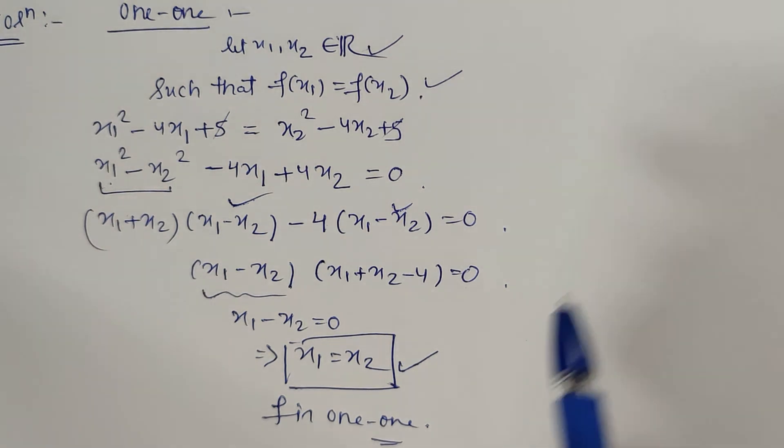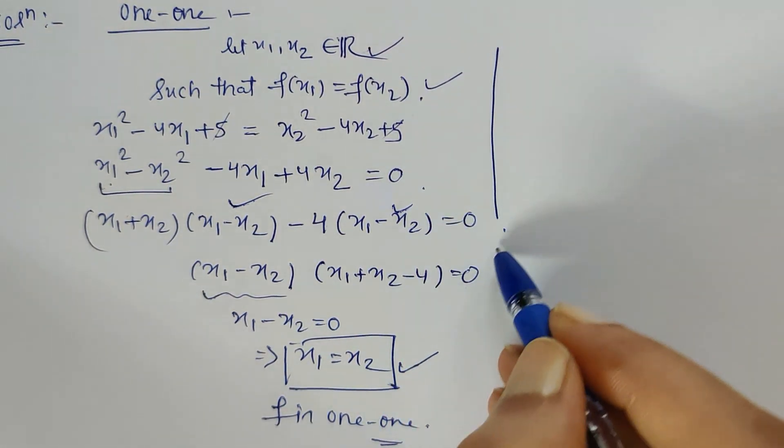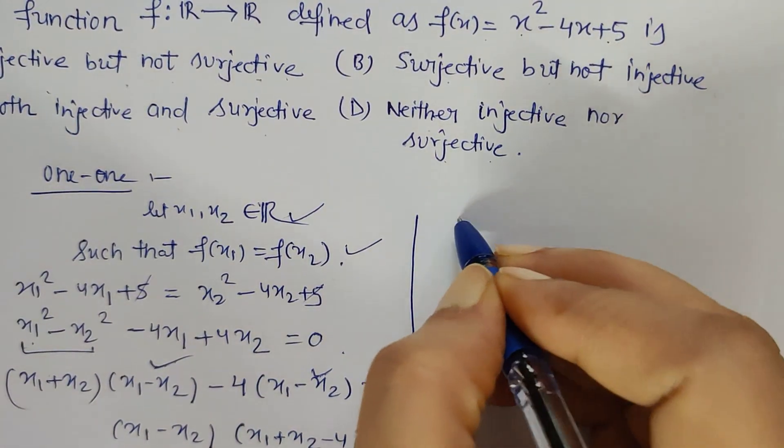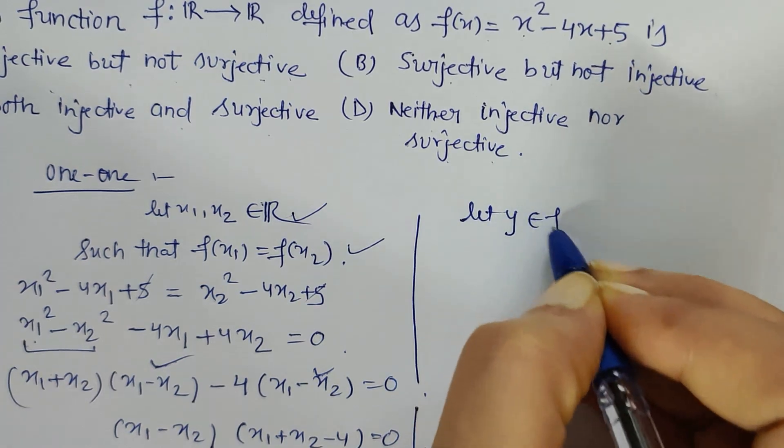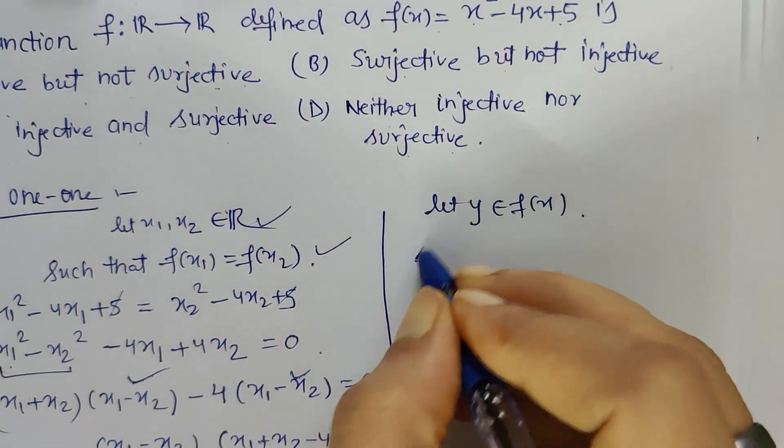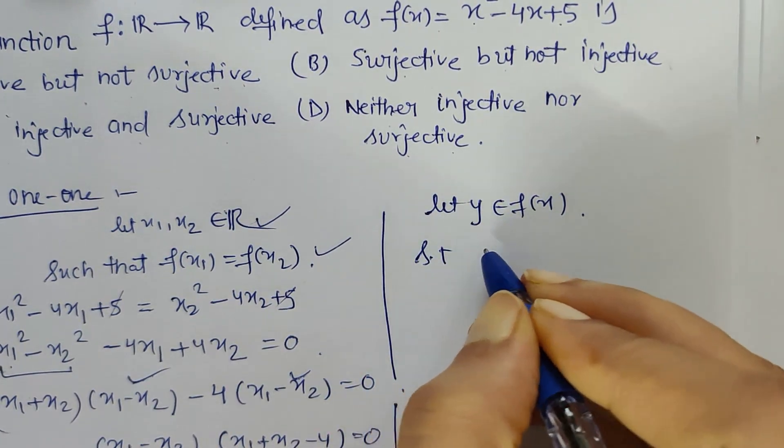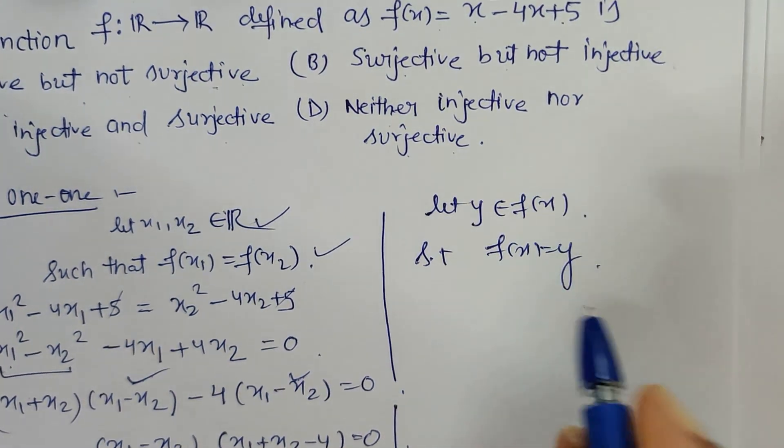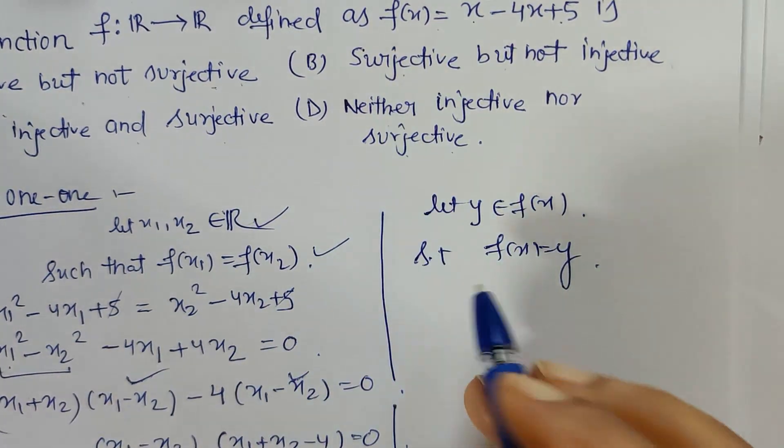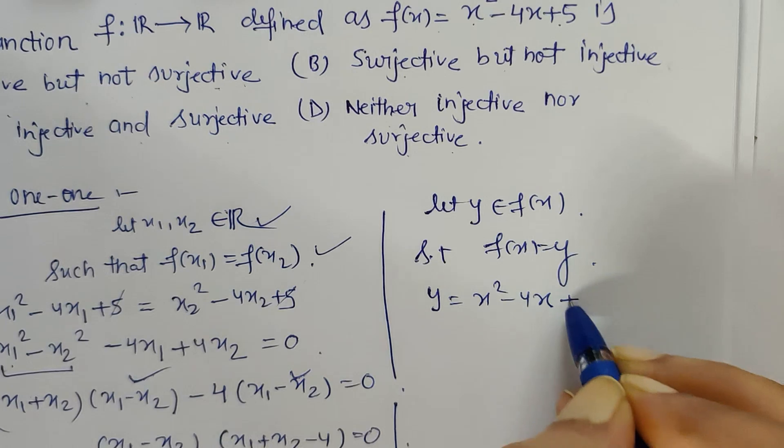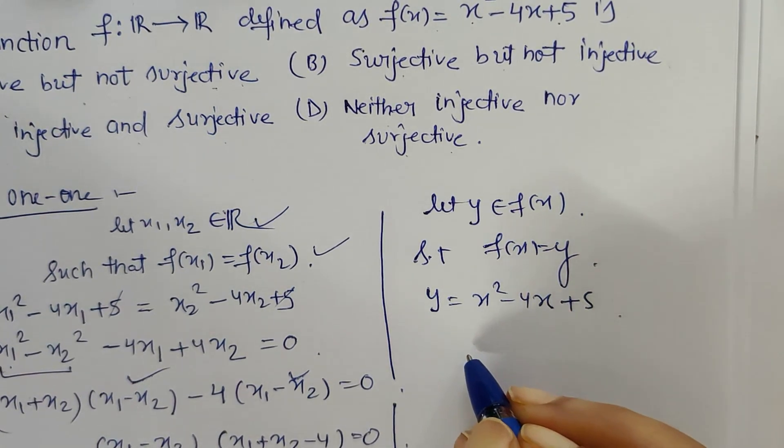The next thing is proving the function is onto or not. For proving it onto, what we have to do: let y belongs to f(x). We have to consider an element in codomain. Let y belongs to f(x) such that f(x) = y. Here f(x) is y now, so y = x² - 4x + 5.